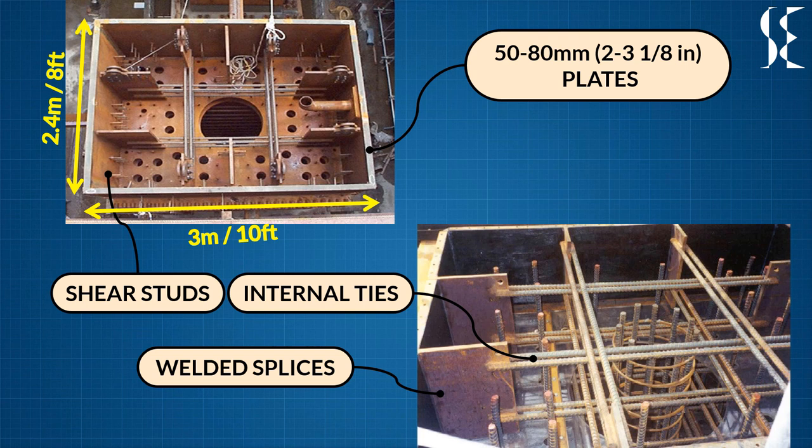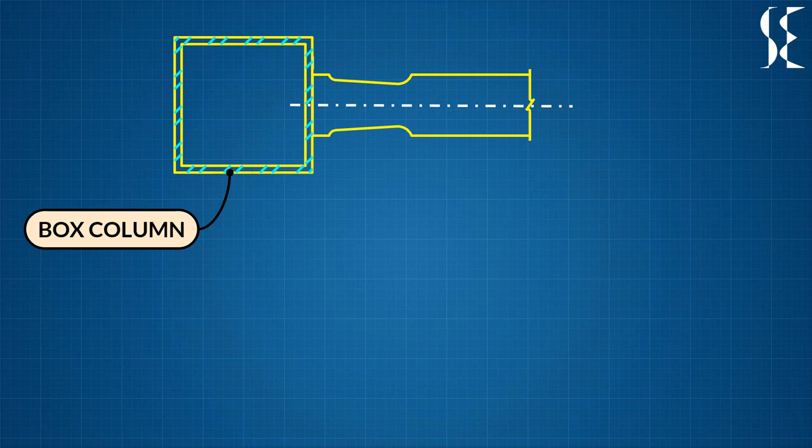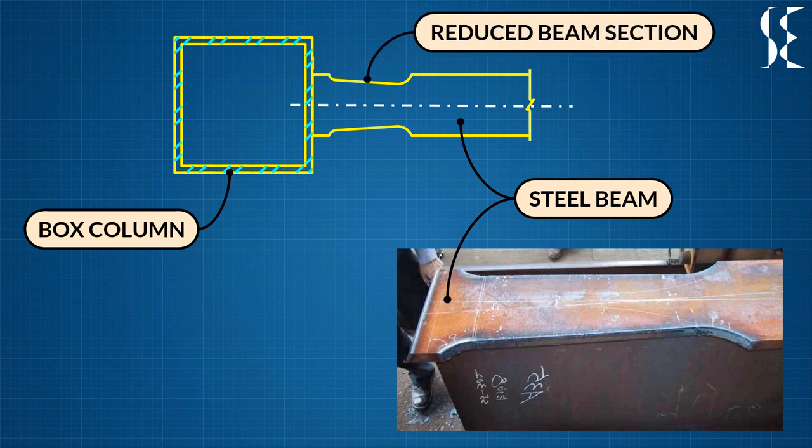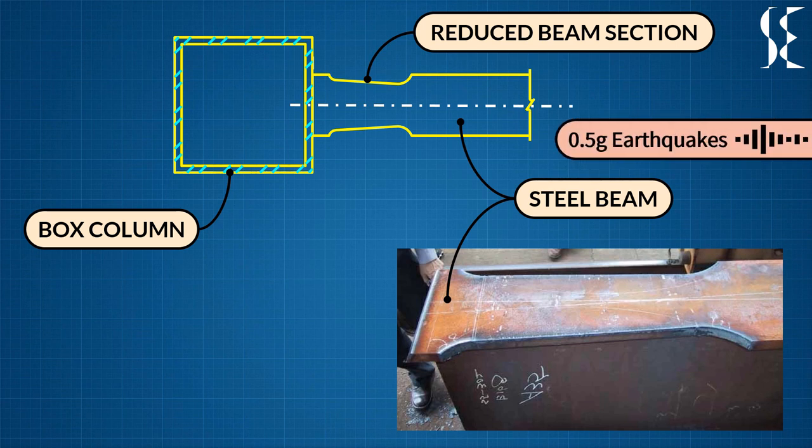The building was designed to be stiff for resisting wind forces first and then checked for seismic ductility and seismic strength. The steel framing used in the building is special moment resisting frame also known as SMRF. Ductility was provided by using reduced beam sections or dog bone detail. Steel moment frames along each sloping face of the building work in parallel with braced core and outriggers to counter seismic forces. The building is engineered to stay up under a 0.5 g ground acceleration.